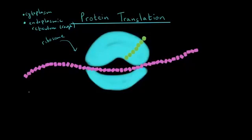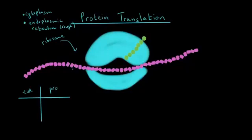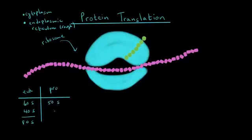Here we get into some differences between eukaryotic cells and prokaryotic cells. In eukaryotic cells, the larger subunit is 60S and the smaller unit is 40S, but if the two units are combined together, they are 80S. In prokaryotic cells, the larger unit is 50S, the smaller unit is 30S, but if we combine them together, they are 70S.